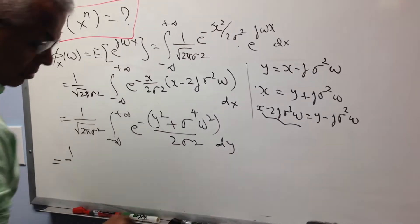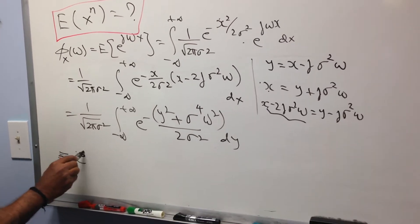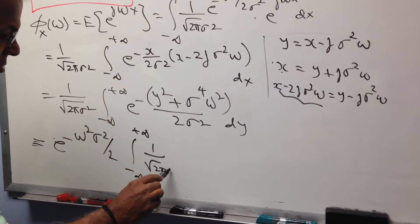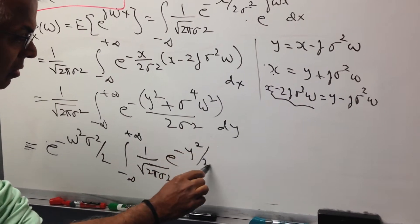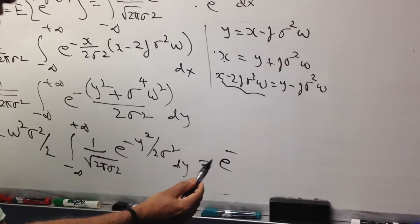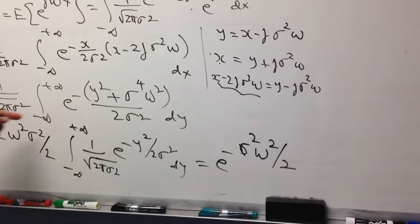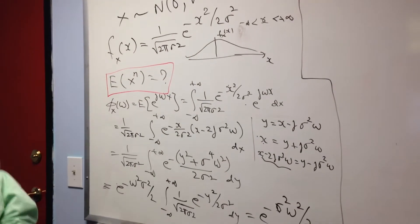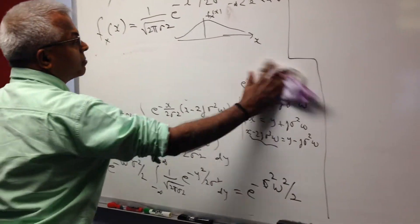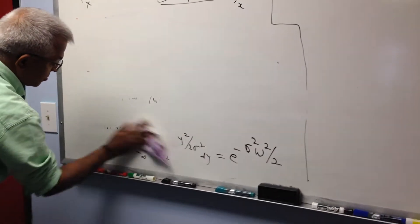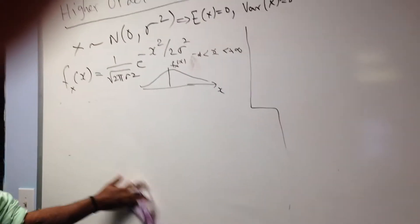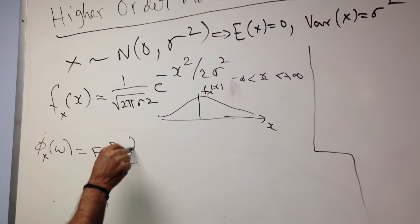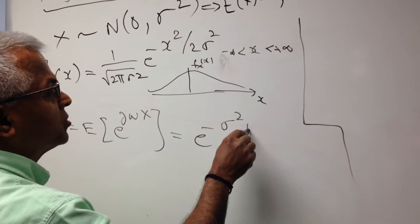One constant factors outside: e raised to minus sigma squared omega squared over 2. The remaining integral from minus infinity to plus infinity is just the Gaussian density function, which integrates to 1. So the standard result is that the characteristic function of the Gaussian random variable is e raised to minus sigma squared omega squared over 2. This is where we are going to start.